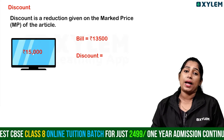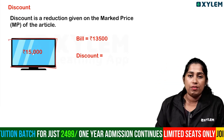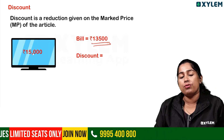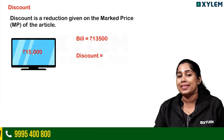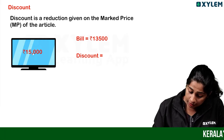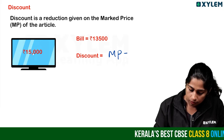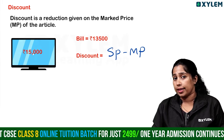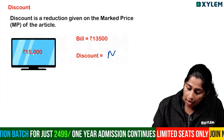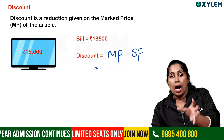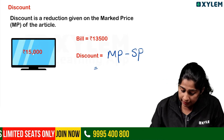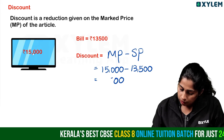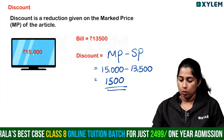Now, let's look at discount. Selling price minus marked price — wait, that's wrong. Discount is marked price minus selling price. For example, if marked price is 15,000 and selling price is 13,500, then the discount is 1,500 rupees.